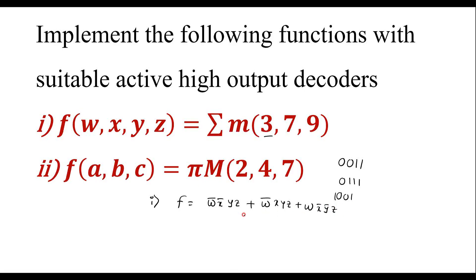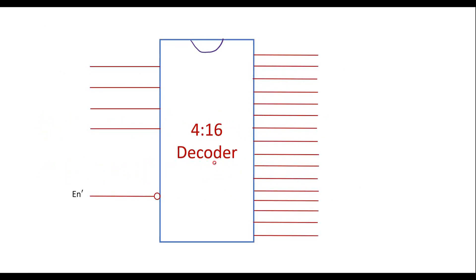To implement this, since it has four variables, we need a 4-to-16 decoder. A 4-to-16 decoder has 4 inputs and 16 outputs. The inputs are w, x, y, and z.